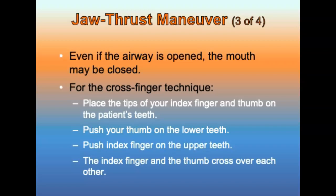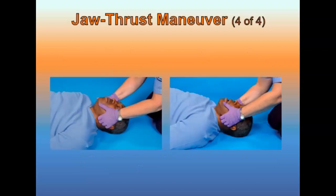To open the mouth, place the tips of your index finger and thumb on the patient's teeth. Open the mouth by pushing your thumb on the lower teeth and index finger on the upper teeth — the pushing motion causes them to cross over each other, which is why this is called the cross-finger technique. The photos on this slide demonstrate how to perform the jaw thrust maneuver: kneeling above the patient's head, fingers behind the angles of the jaw, moving the jaw upward using the thumbs.